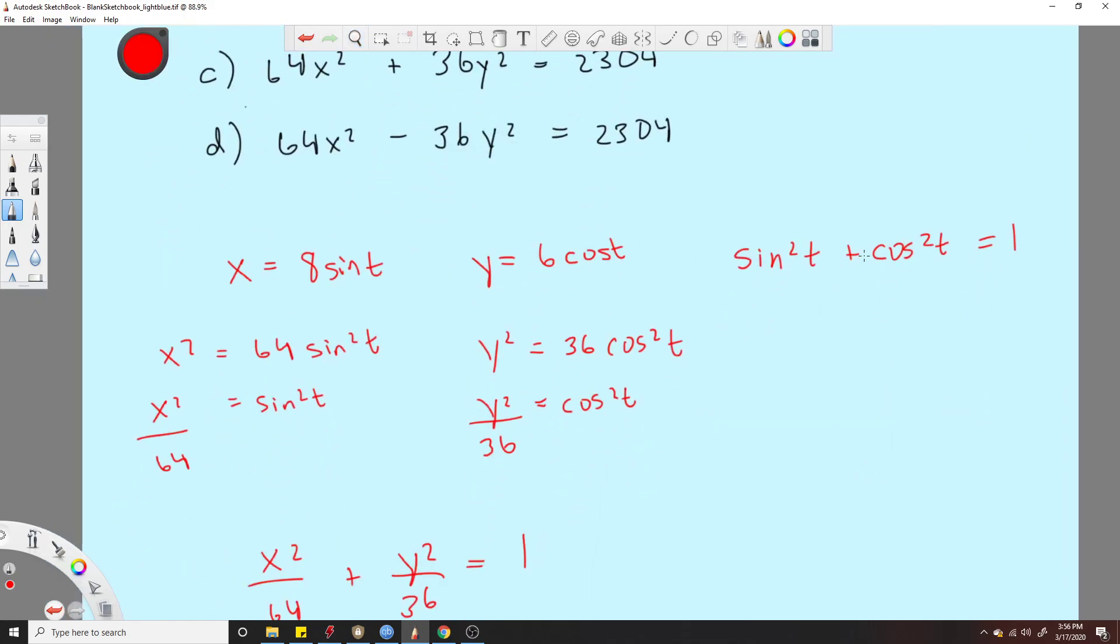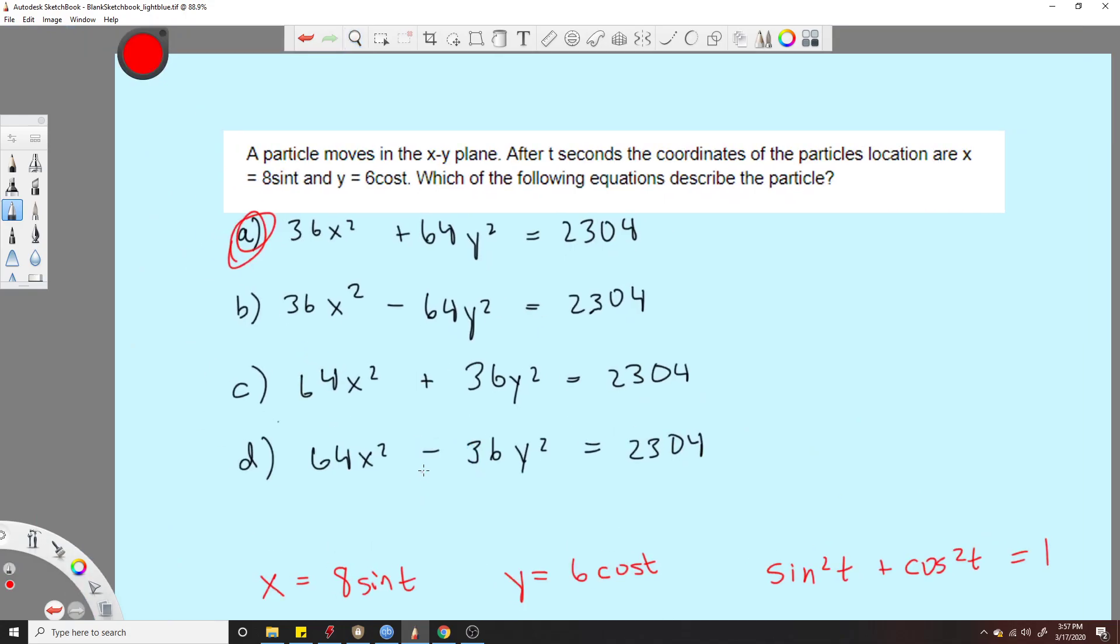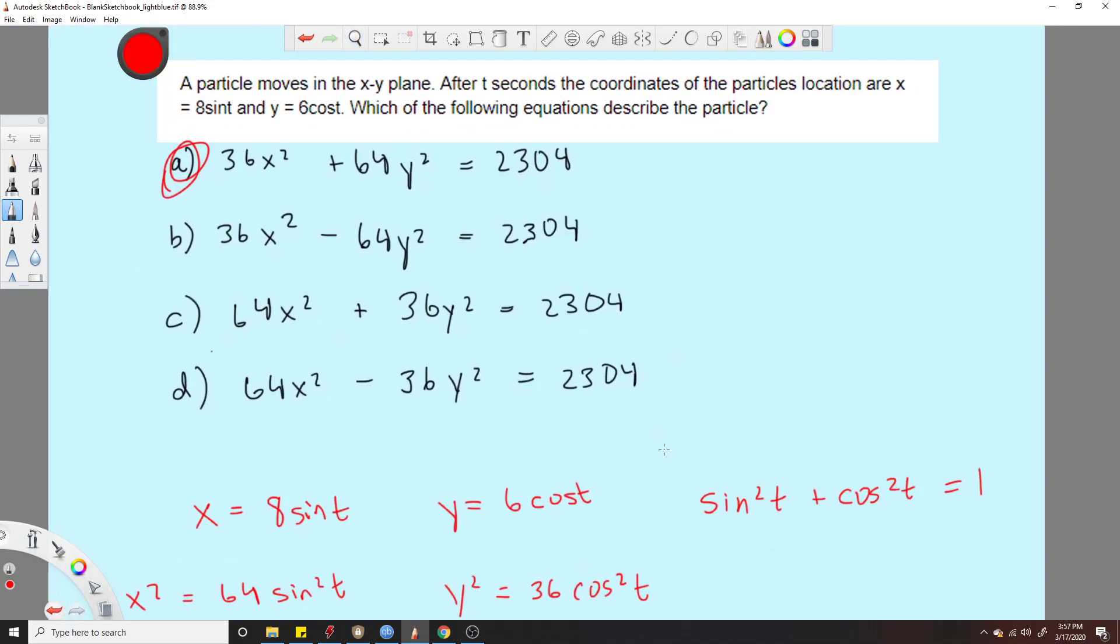Yeah, the hard part of this problem is just to realize that you need to use this trig identity. And again, I would just try to, I don't know, maybe come to the understanding that you're going to have to square these just by looking at the answers. That's the only way I see how to do it. So if you guys have any other more clever ways to solve it, let me know. Maybe I'll go over it again.